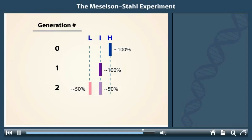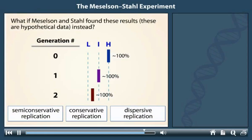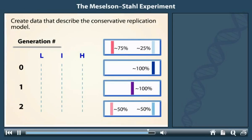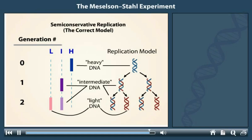Click on the correct model. What would these hypothetical data suggest about DNA replication? Click on the appropriate model. Drag the appropriate density profiles to the generations on the left. Although we have examined what the data would look like for all three types of replication, keep in mind that Meselson and Stahl's real data match with semi-conservative replication.